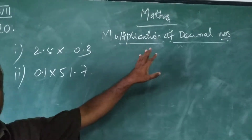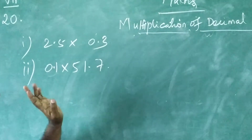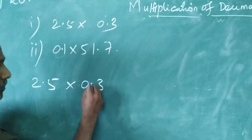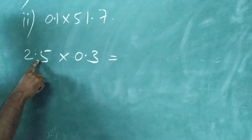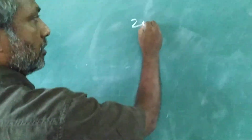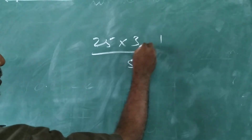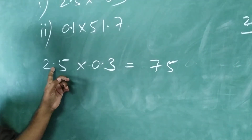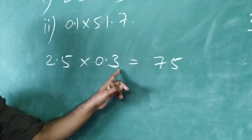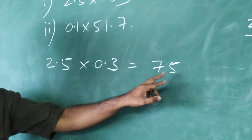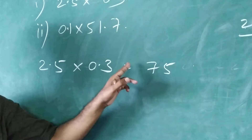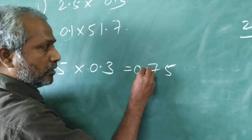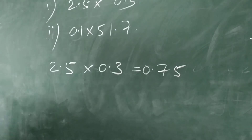Next, we will move to multiplication of two decimal numbers — that means both numbers are decimals. Example: 2.5 into 0.3. First, directly multiply 25 into 3. 5 threes are 15, carry 1; 2 threes are 6, plus 1 is 7, so 75. Now look at the two numbers: after the decimal, one place each. Totally in the result, take the decimal from right to left two places. So 75 becomes 0.75.